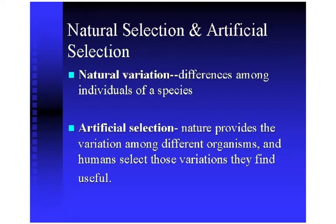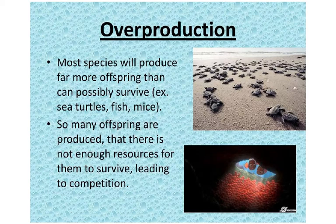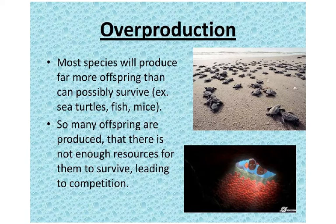A brief comparison: in natural selection, natural variation exists among individuals of a species. In artificial selection, nature provides the variation but humans select the variations they find useful. Regarding overproduction, most species produce far more offspring than can possibly survive — for example, sea turtles, fish, and mice. So many offspring are produced that there are not enough resources for all of them to survive, leading to competition, and the best suited to the environment will survive.